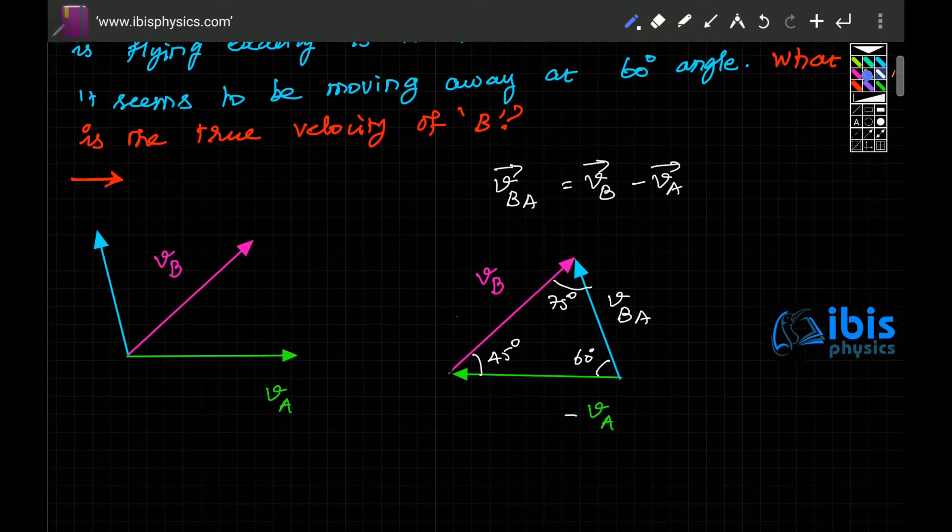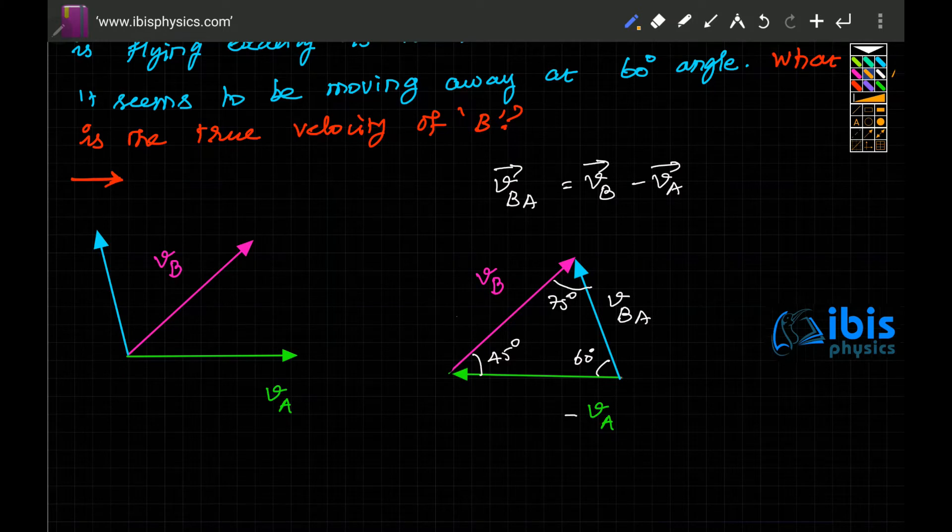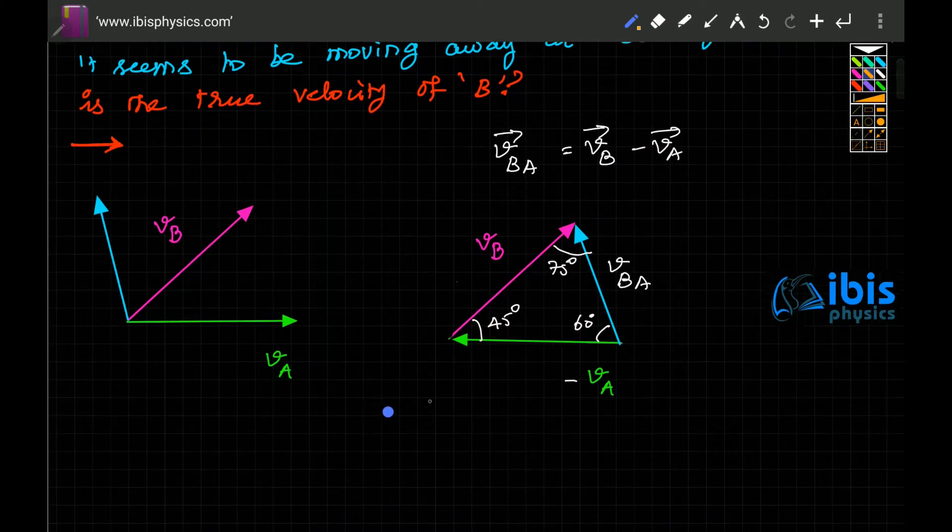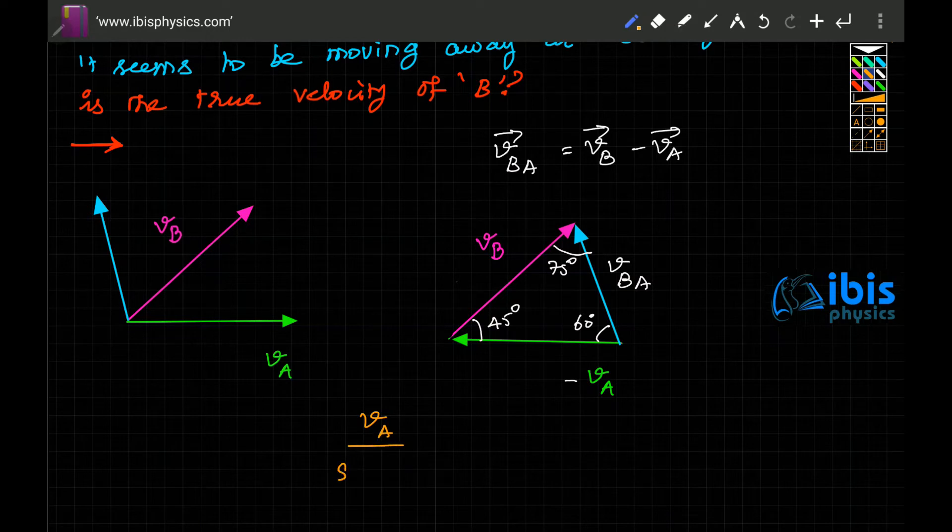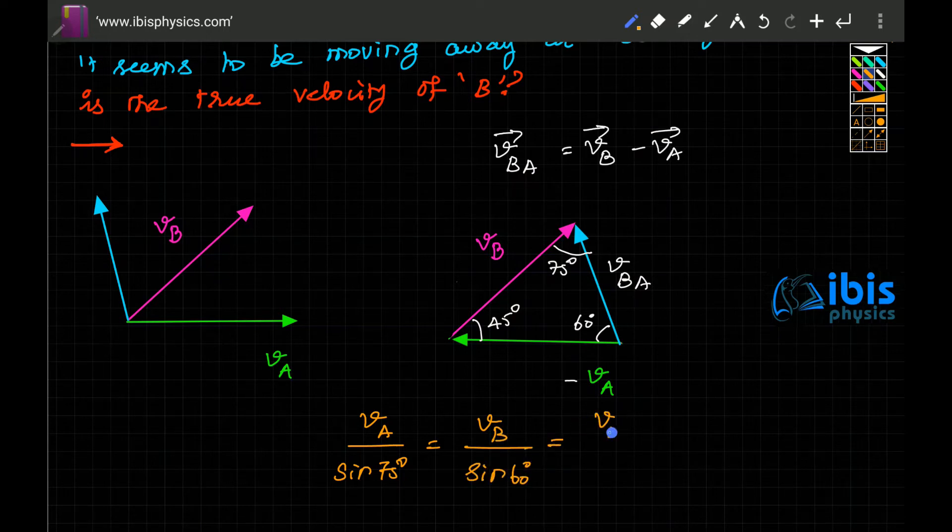Then you can easily apply Lamy's theorem. According to Lamy's theorem, VA by sine 75 degrees equals VB by sine 60 degrees equals VBA by sine 45 degrees.